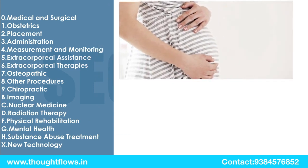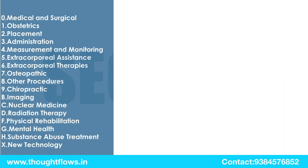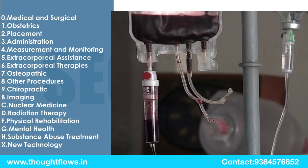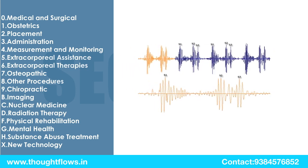If any OB/GYN patient came for removal of products of conception, that will be taken from the Obstetrics section. Next, the Placement section covers all dressings, immobilization, or packing. The Administration section covers the administration of blood, plasma, stem cells, etc. All monitoring, extracorporeal assistance, and therapies are found in sections 4, 5, and 6.